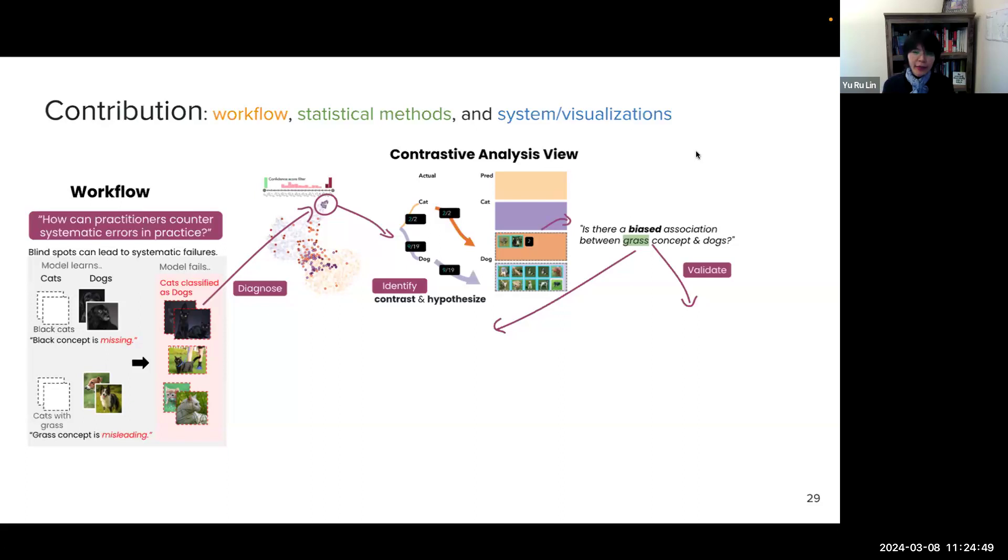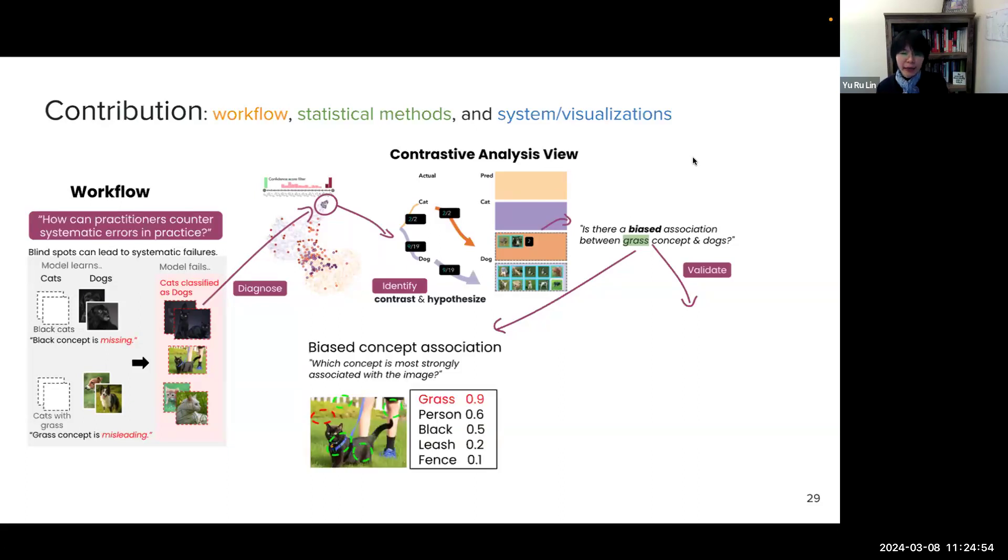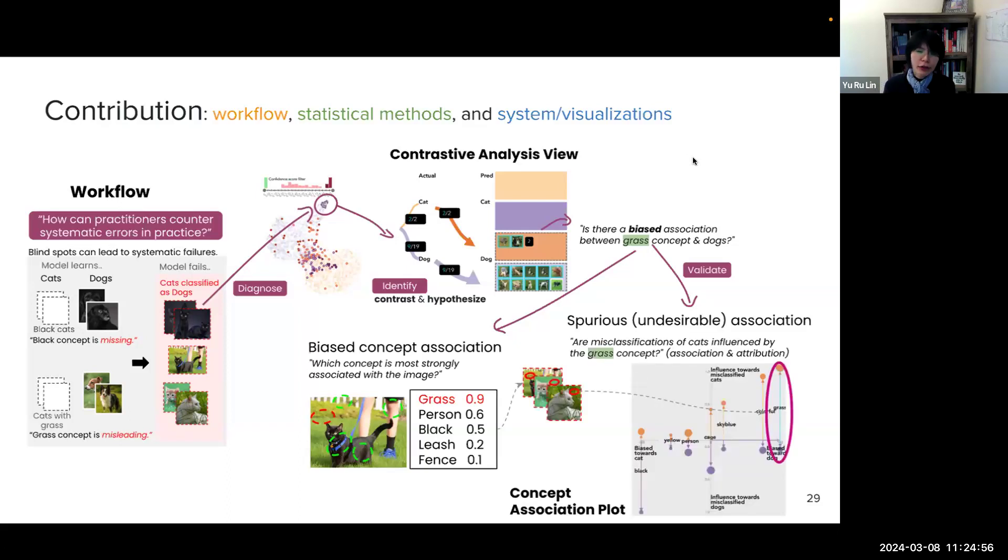Now, validation. Users can validate the hypotheses by using the concept association plot. And this allows them to check whether the system is learning bias patterns and whether they are spurious or undesirable associations between the class and salient patterns. And then, finally, mitigation. So after identifying the spurious associations, users can decide how to mitigate the errors using the bias plot.